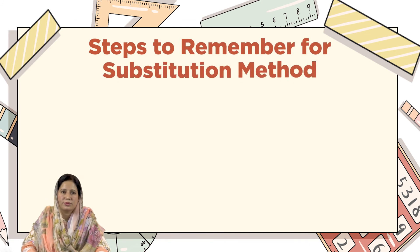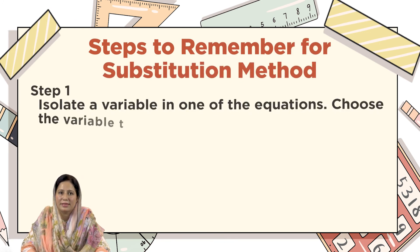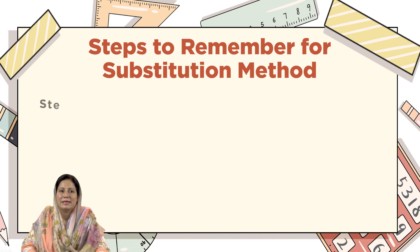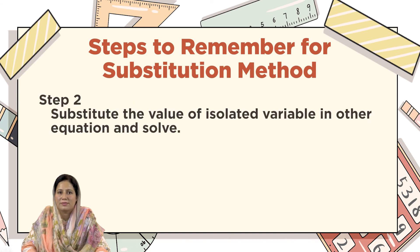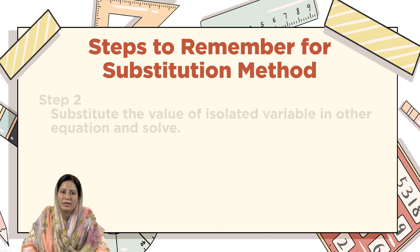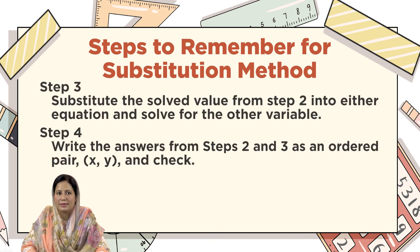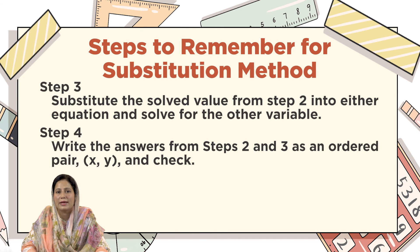Steps to remember for the substitution method. Step 1: isolate a variable in one of the equations — choose the variable with a coefficient of 1 or minus 1 if possible to avoid fractions. Step 2: substitute the value of the isolated variable into the other equation and solve. Step 3: substitute the solved value from step 2 into either equation and solve for the other variable. Step 4: write the answers from steps 2 and 3 as an ordered pair (x, y) and check.